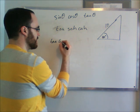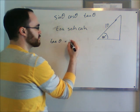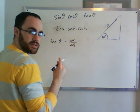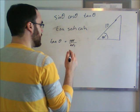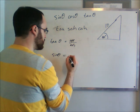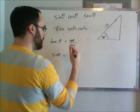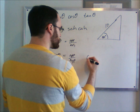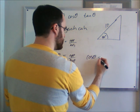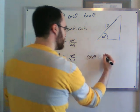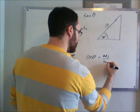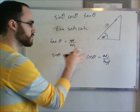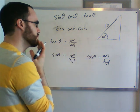So tan theta, or just tan of the angle, is equal to opposite over adjacent. Sine theta is equal to opposite over hypotenuse. And cos theta equals adjacent over hypotenuse. So these are the ratios that we're going to be using to solve for this triangle.